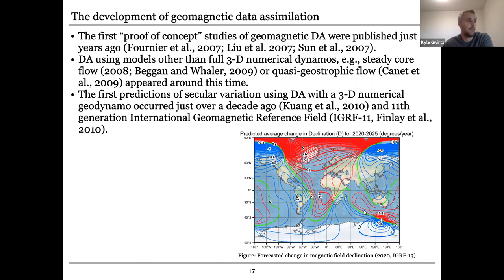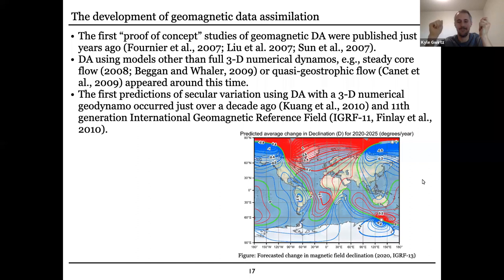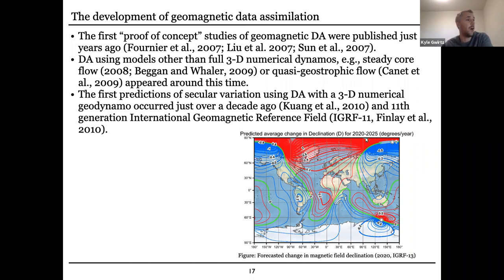I showed a plot earlier from the international geomagnetic reference field. They release these every five years, and it includes not just a map of the present field and the recent field, but also a projection of the future — specifically the average rate of change in those spherical harmonic coefficients for the large-scale features of the field for the coming five years, so you can do a linear extrapolation. There's an international panel of scientists that gets together and people submit their projections, and they come up with some weighted combination of those submissions.